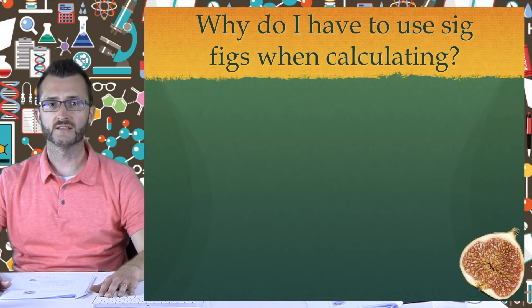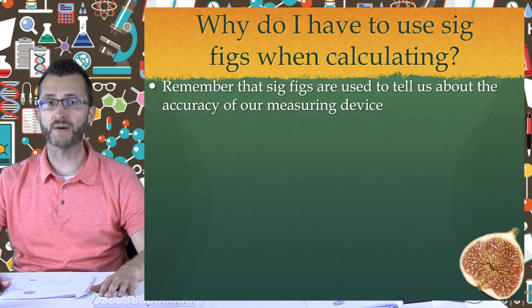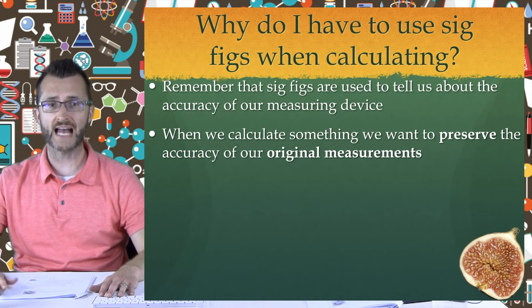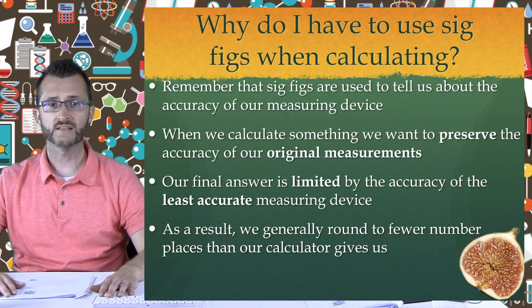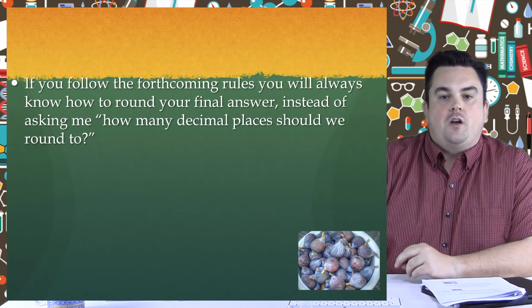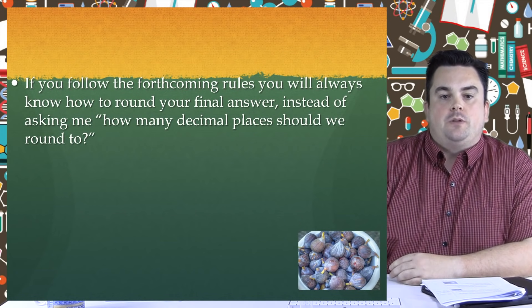Calculations using significant figures — a lesson from the lab skills unit. Why do I have to use sig figs when calculating? Remember that sig figs are used to tell us about the accuracy of our measuring device. When we calculate something, we want to preserve the accuracy of our original measurements. Our final answer is limited by the accuracy of the least accurate measuring device. As a result, we generally round to fewer number places than our calculator gives us, because the device we use to measure just isn't that accurate. If you follow the forthcoming rules, you will always know how to round your final answer.